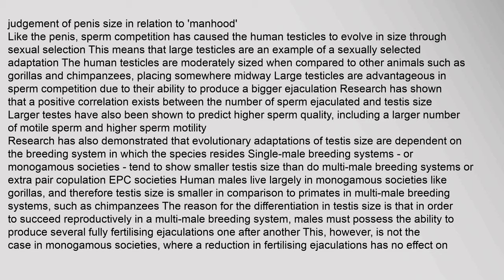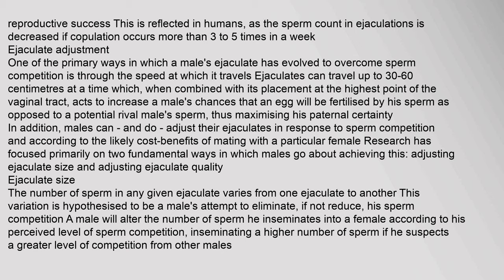Evolutionary adaptations of testes size are dependent on the breeding system in which the species resides. Single-male breeding systems or monogamous societies tend to show smaller testes size than multi-male breeding systems or extra-pair copulation (EPC) societies. Human males live largely in monogamous societies like gorillas, and therefore testes size is smaller in comparison to primates in multi-male breeding systems such as chimpanzees. The sperm count in ejaculations is decreased if copulation occurs more than three to five times in a week.